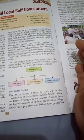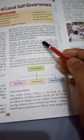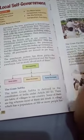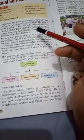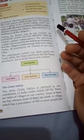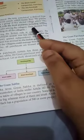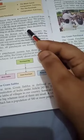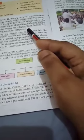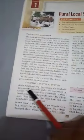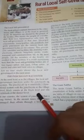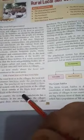Each Panchayat has punch, meaning five elder people of the village, who look into the affairs of the villages and solve problems. The people had to abide by whatever decision was made by the Panchayat punch. The Panchayati Raj system is a three-tier system: you have the Panchayat at the village level, Block Samitis at the block level, and Zila Parishads at the district level.